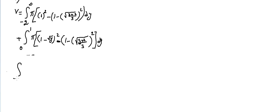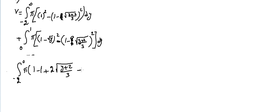Let's do only the integral from minus 2 to 0 of π [1² minus (1 minus √(y+2)/√3)²] dy. This is a square of a binomial, so expanding the identity: square of the first is 1, minus 2 times 1 times the second, plus square of the second — and with the minus sign outside, it's minus y plus 2 over 3 dy.